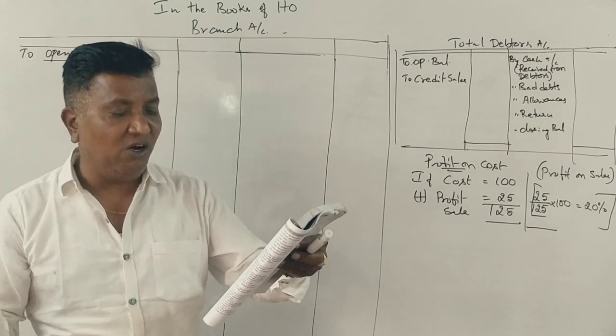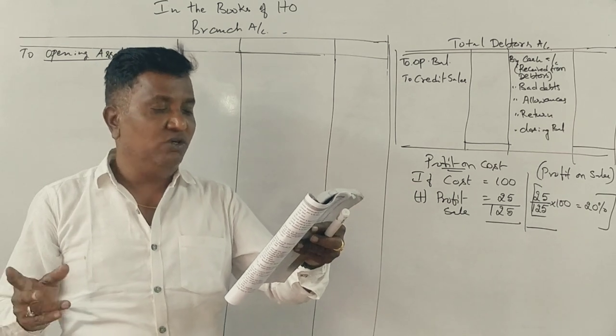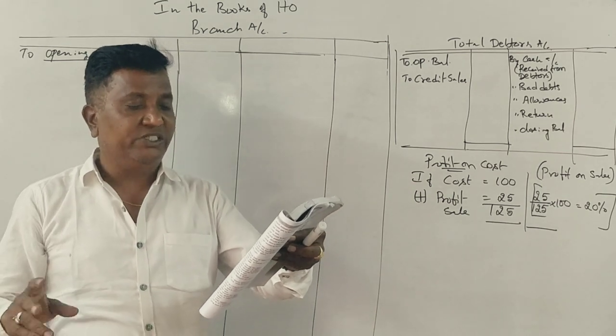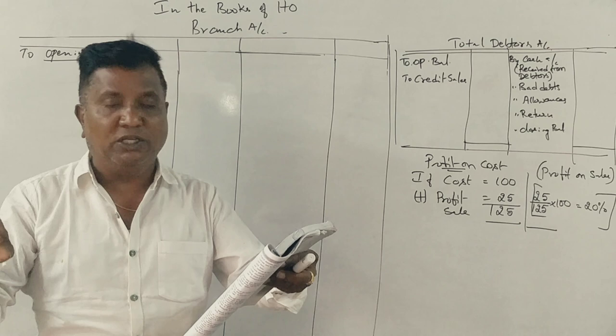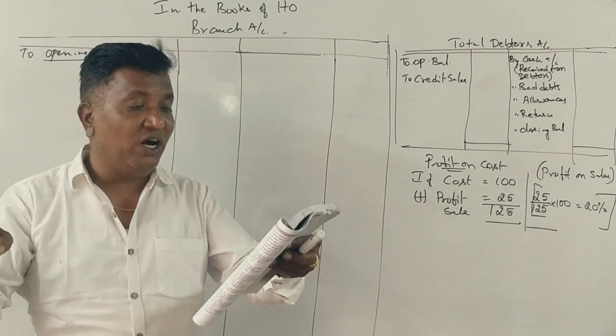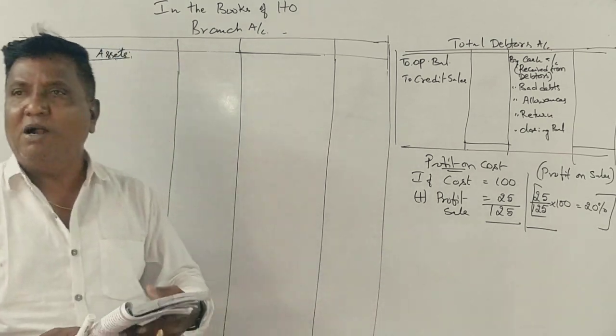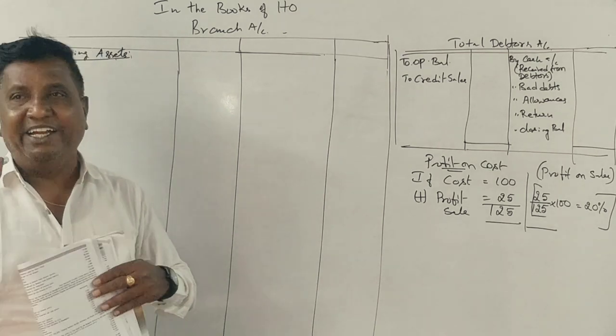Discount allowed to debtors, goods returned by customers. Stock on 31st March 2018 at invoice price. Correct? This is what we call it.